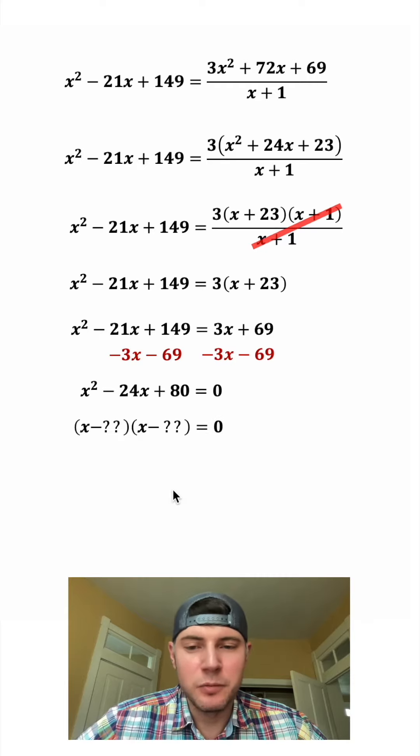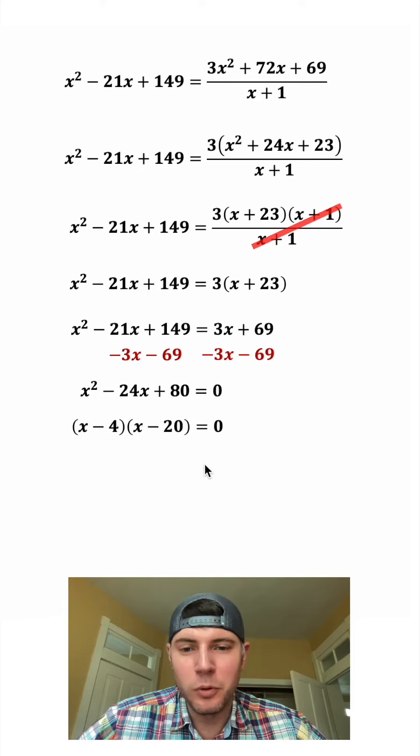And now we want to factor again. We want two numbers that add to negative 24 and multiply to positive 80. Well, that'll be negative 4 and negative 20.